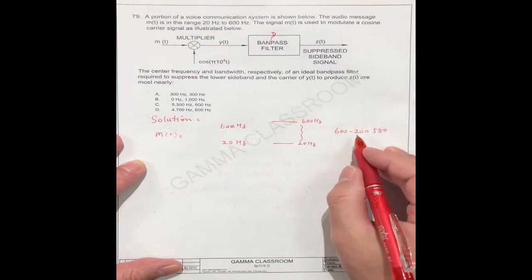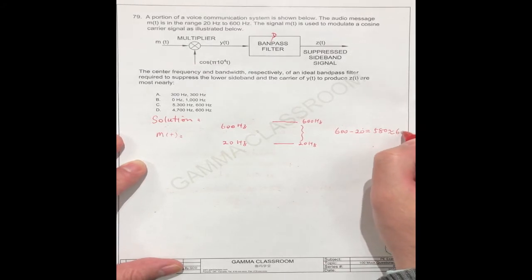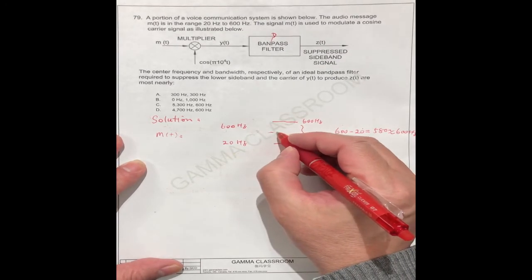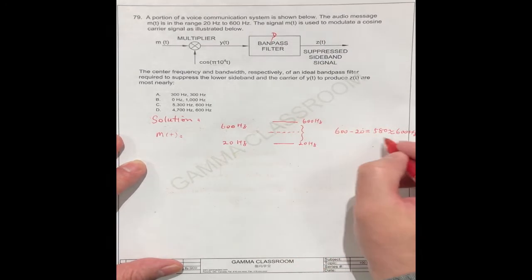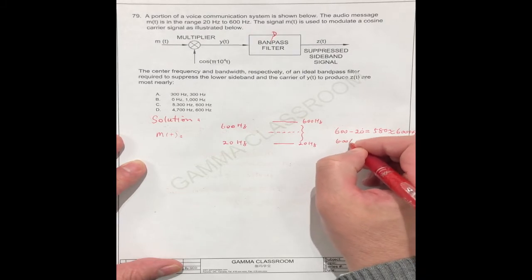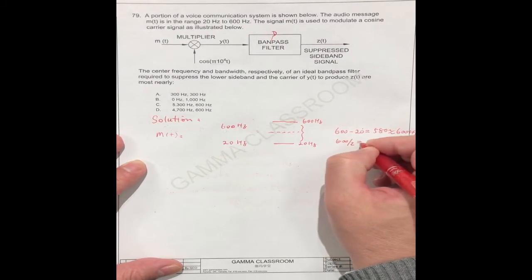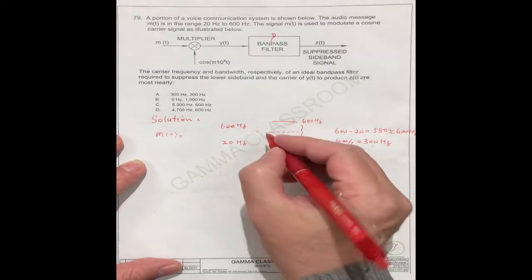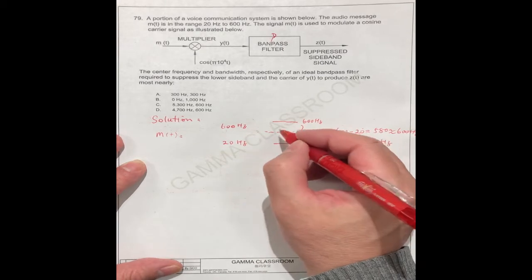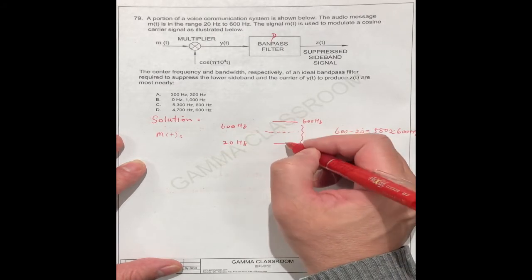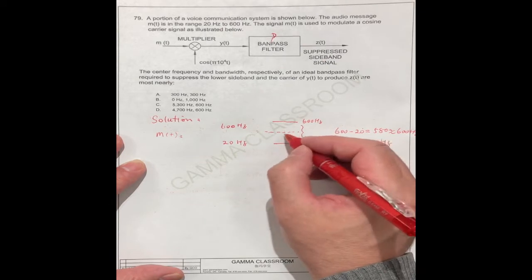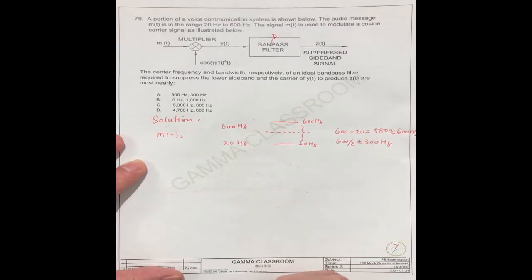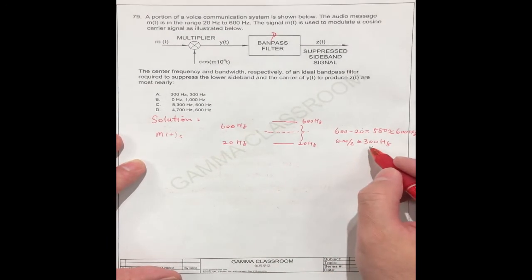Normally, we don't keep the 20, we just assume it equal to 600 hertz. So the center should be 600 divided by 2, equal to 300 hertz. So this message frequency range is here from 20 to 600. The middle is 300, which is just for simplicity. The number should be 290 or 280.